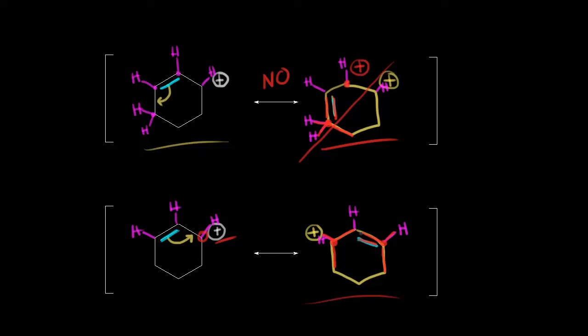Now it looks a bit confusing when the hydrogens are drawn in, which is why we leave them off. That's why we leave off those hydrogens when drawing resonance structures — they get in the way, and once you understand what's going on, it's not necessary to draw them in.